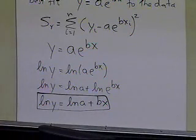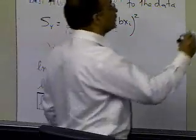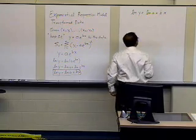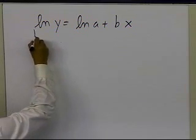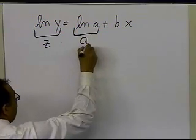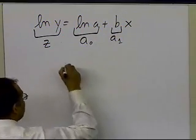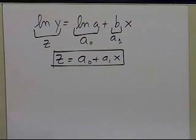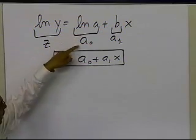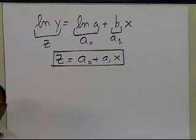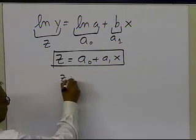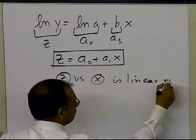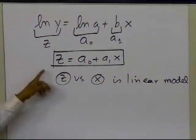So we have log(y) = log(a) + bx. If I let z = log(y), a0 = log(a), and a1 = b, I can write z = a0 + a1*x. What you're finding out is that z versus x is a linear model. So you can now use the simple linear regression relationships to find a0 and a1.